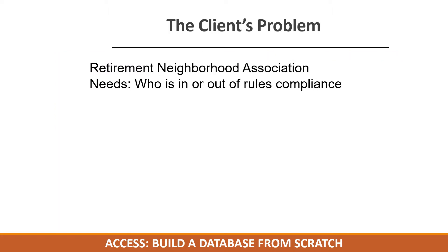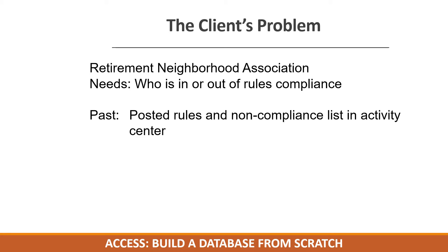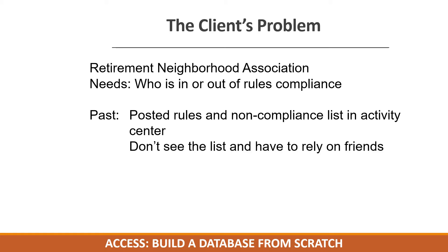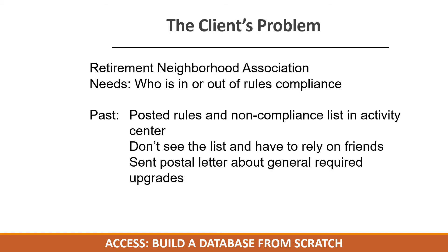While every resident was issued a list of the rules when they purchased a home, over the years, like most of us, they tend to forget. The Association posts a long list of rules in each activity center and has even posted a map highlighting homes that are out of compliance. Because most of the residents are seasonal, they don't see the list when it's posted and have to rely on friends or neighbors to let them know. They occasionally send letters, but the Excel file containing residents' preferred mailing addresses is unwieldy, with lots of unnecessary duplicates, causing their mailing budget to soar.